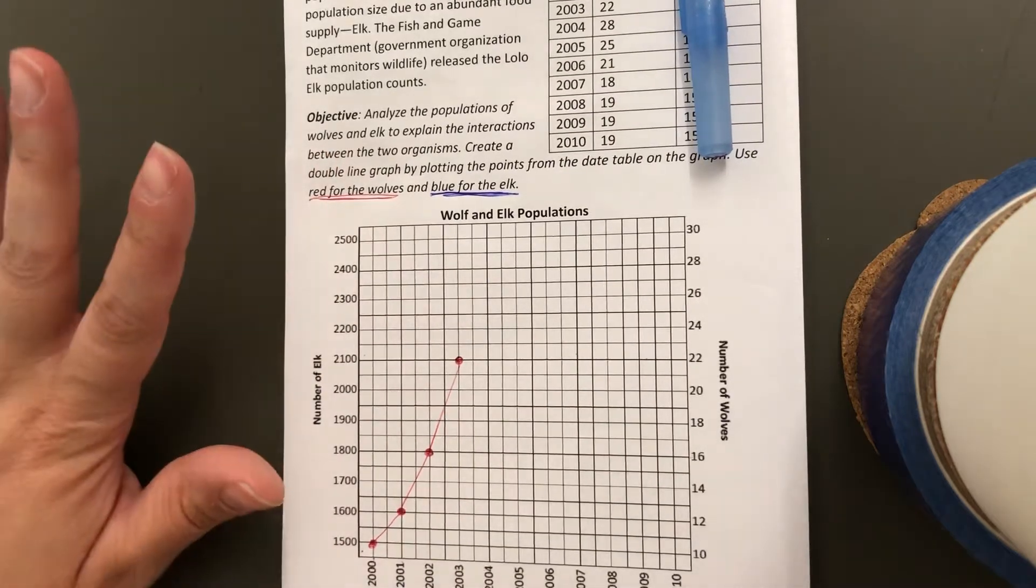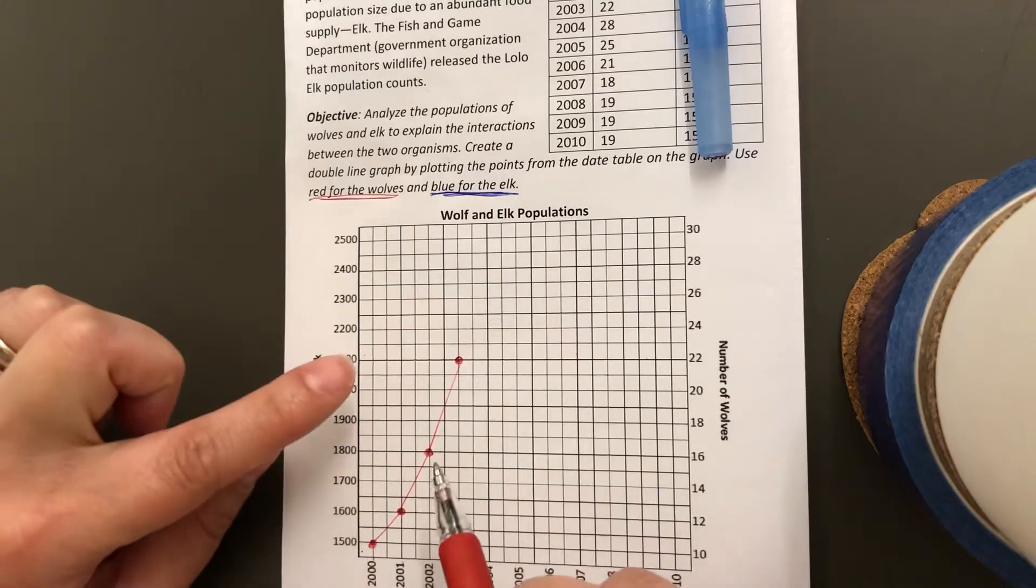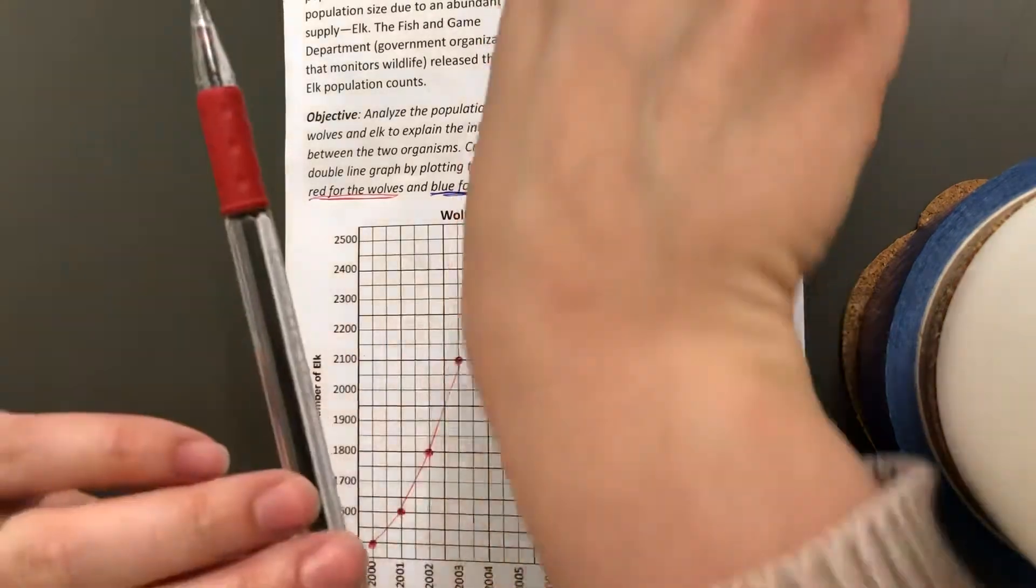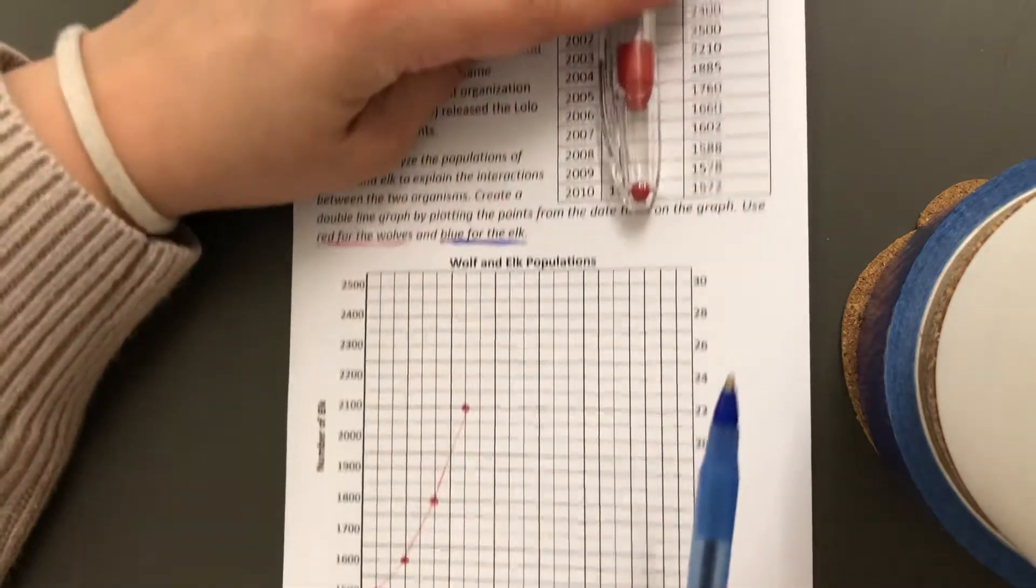Once I'm done plotting my wolf population—this is not done, this is just started for you—then I'm going to ignore the wolf population and plot the points from the elk population.